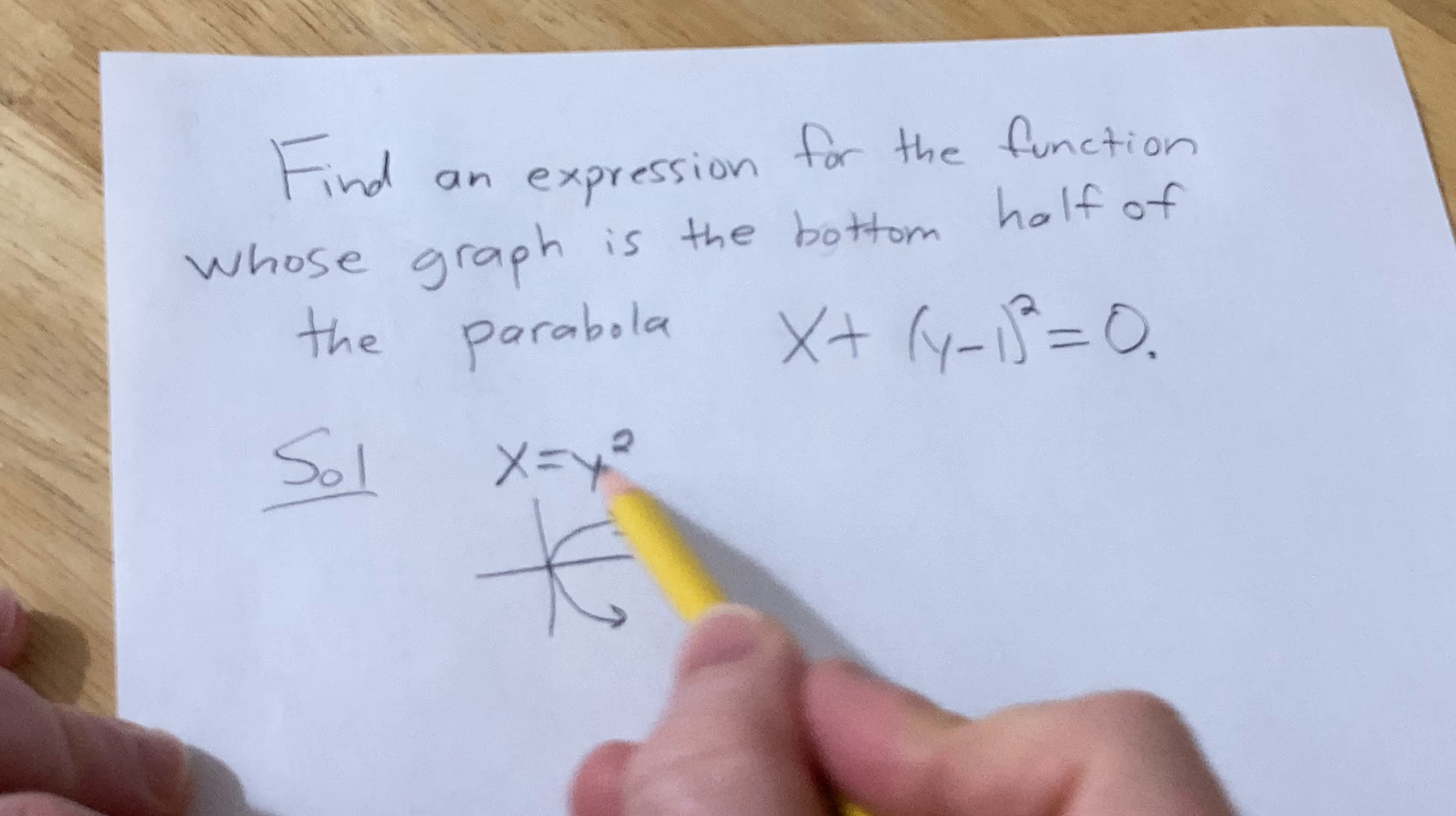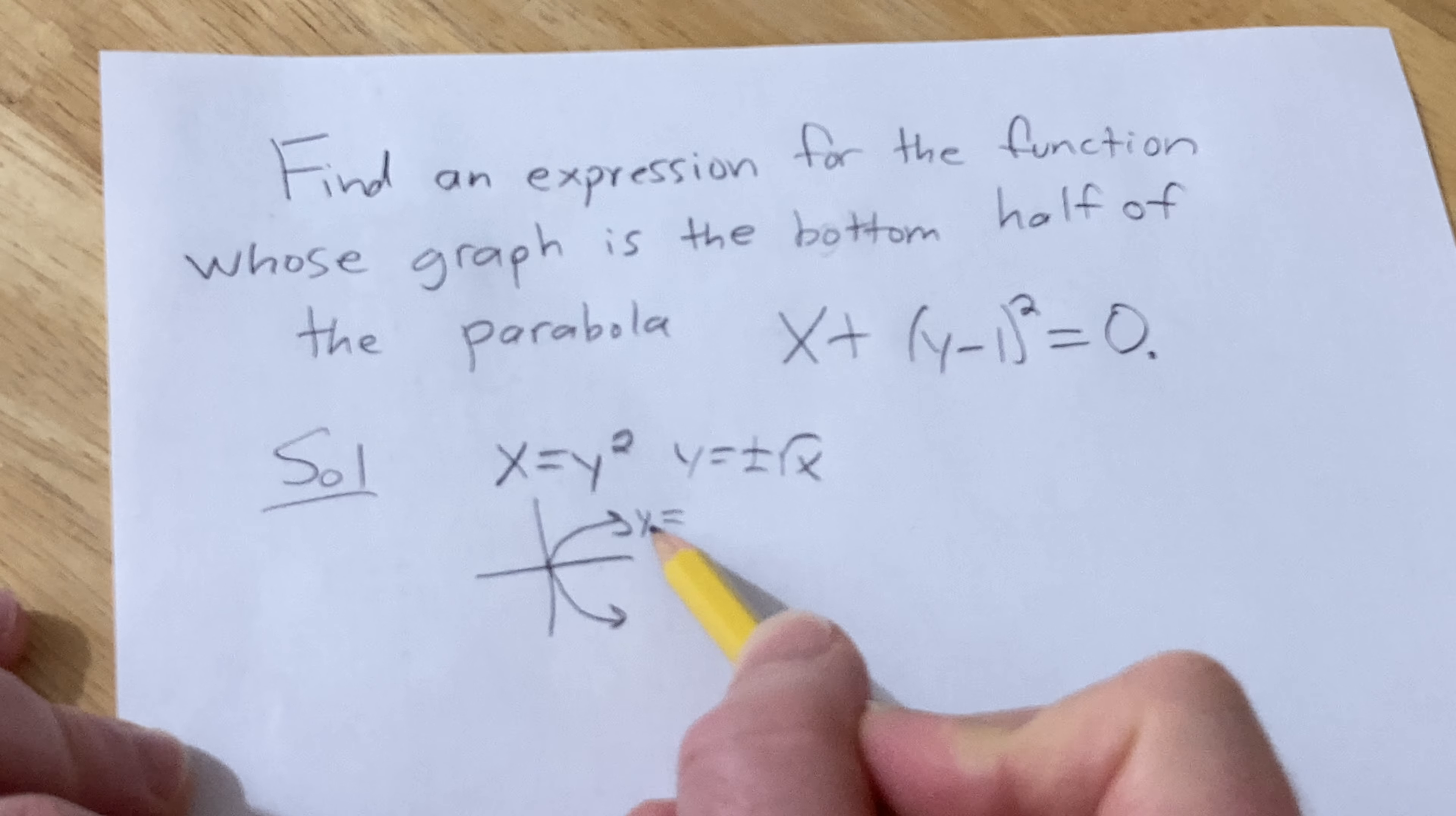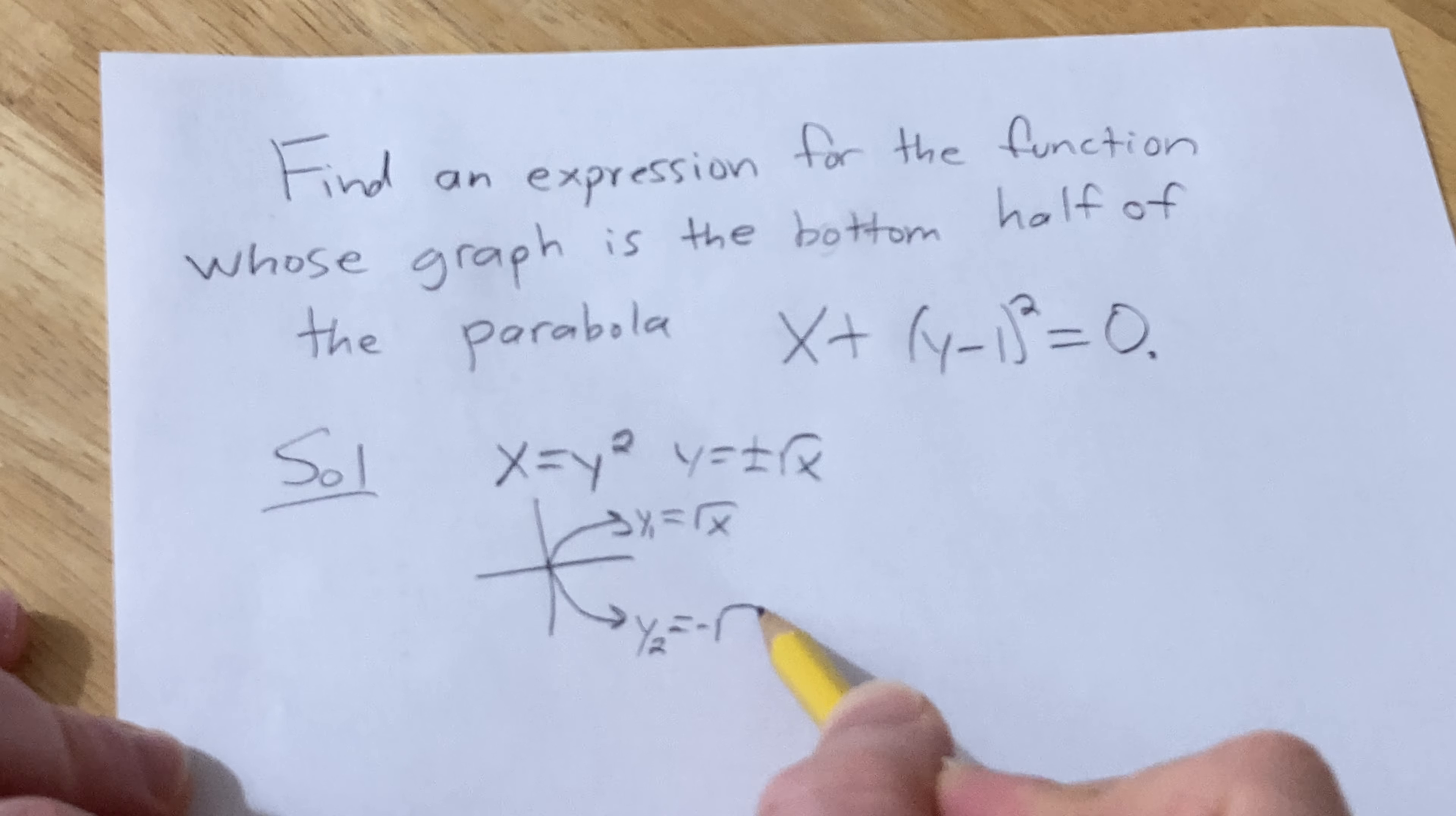And if you were to solve this equation for y, you would get y equals plus or minus the square root of x. The top half of the parabola would be the function y₁ equals square root of x. The bottom half would be the function y₂ equals minus square root of x.